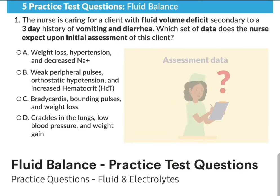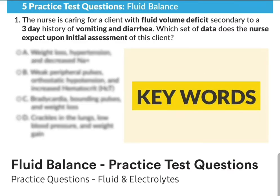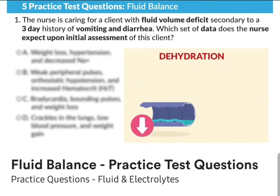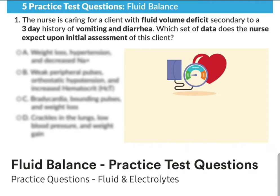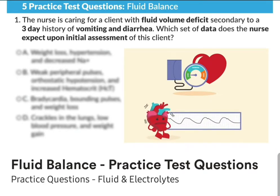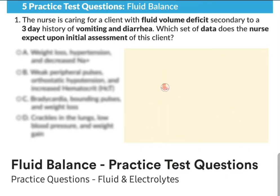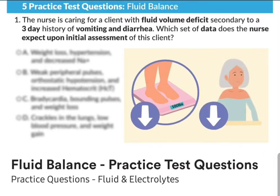Let's break it down. Before looking at the options, consider the key words in the question. The first key term is fluid volume deficit — fluid is low in the body, we have a deficit of fluid. Think dehydration from low fluid in the body. We can think of hypotension and weak pulses — the body doesn't have enough fluid inside the blood to cause big bounding pulses, so it's going to be weak. And weight loss, because weight loss is water loss.